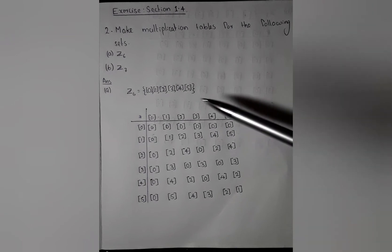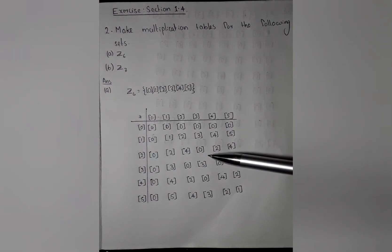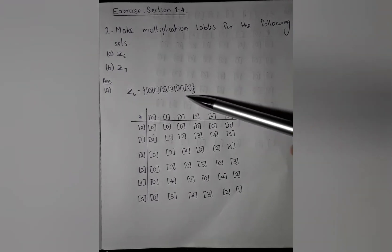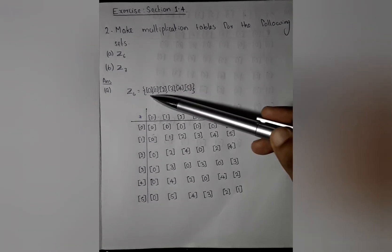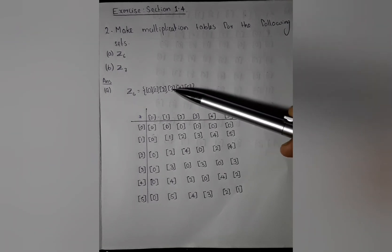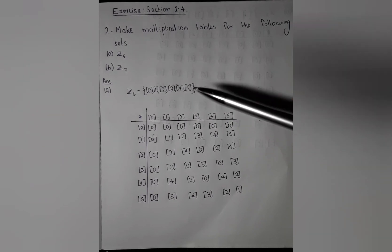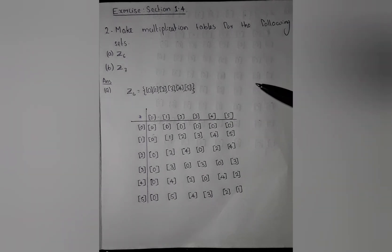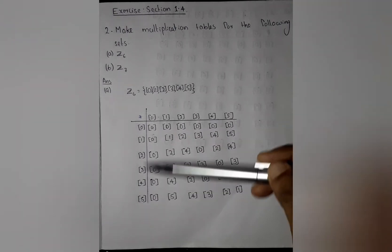First we can see the multiplication table of set 6. Set 6 have these six elements: 0 modulo, 1 modulo, 2 modulo, 3 modulo, 4 modulo and 5 modulo. We can write these six elements as vertically and horizontally.